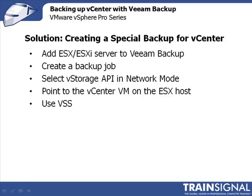Here's the solution, also described in a blog post by Kendrick Coleman: add the ESX or ESXi server that the vCenter server is running on to Veeam Backup directly as a new host. Then create a backup job, select the vStorage API in network mode, and select the vCenter virtual machine running underneath the newly added ESX server, specifying that you want to use VSS.